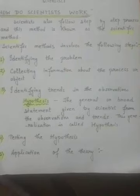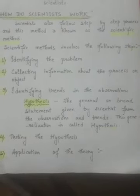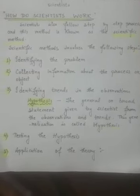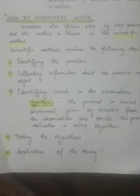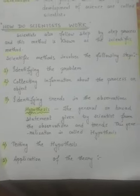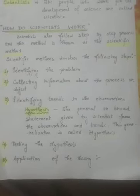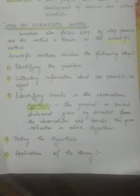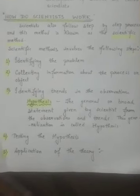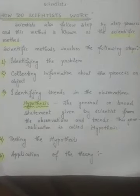The general or broad statement given by the scientist from the observations and trends is known as a hypothesis. For example, consider the current situation scientists face with coronavirus. To give a hypothesis, they first observe: the symptoms of coronavirus are similar to cold and flu. They naturally observed these trends and then gave a hypothesis — a general statement given by scientists.